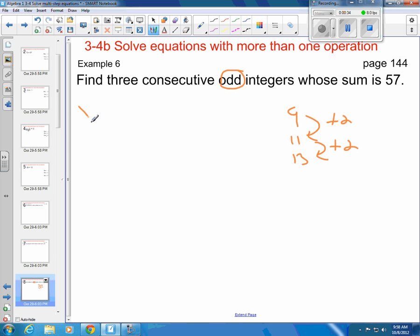So my first integer, since I don't know what it is, we'll call that x. x is my first. My second integer, to get from one to the next, I'm going to add two, so that's going to be x plus 2. That's going to be my second one.